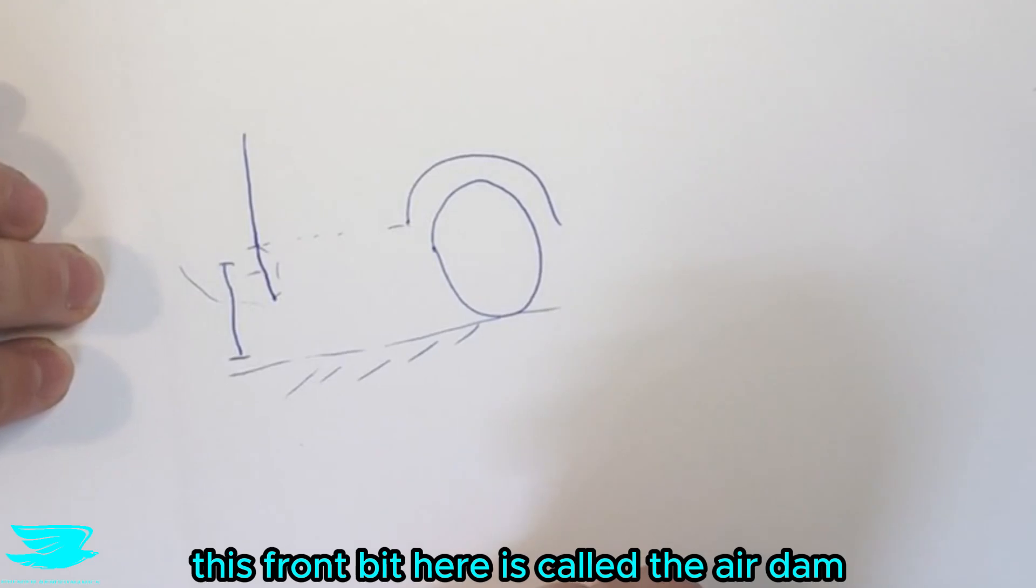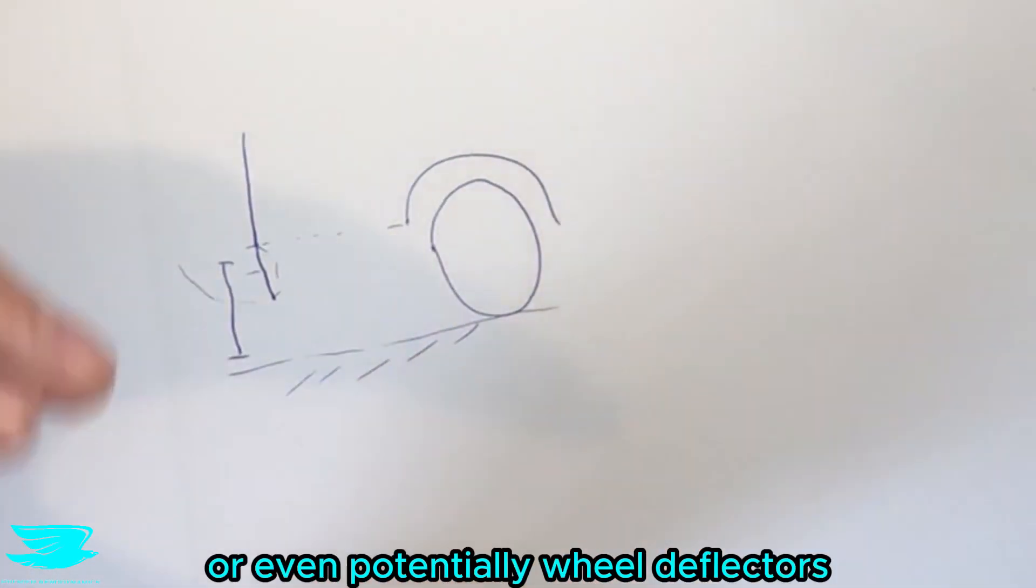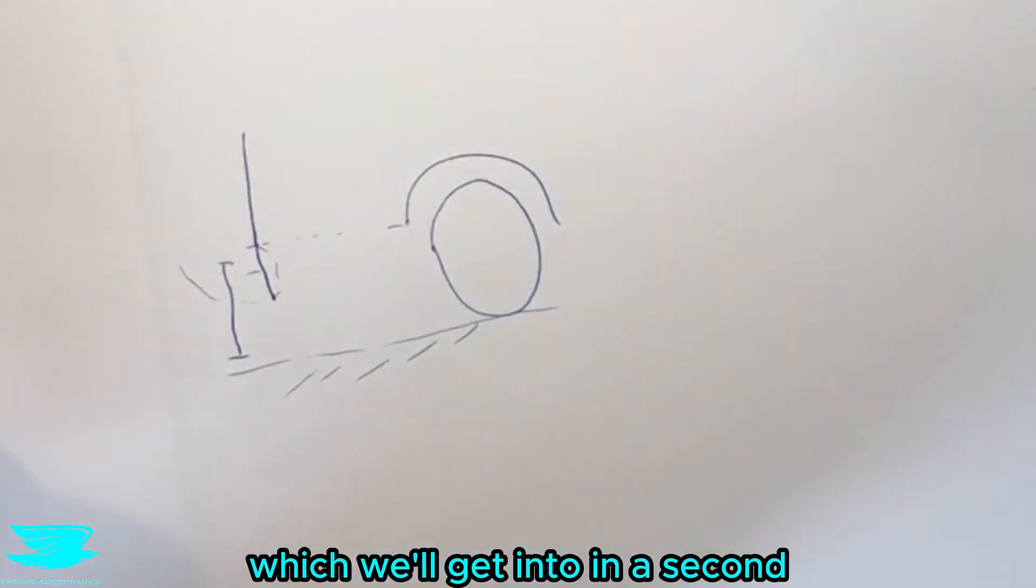This front bit here is called the air dam or a chin spoiler or even potentially wheel deflectors which we'll get into in a second.